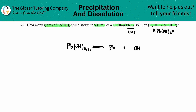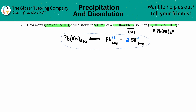So we get Pb²⁺ and OH⁻. Using the subscripts and criss-cross method: hydroxide is a negative one charge, and there are two hydroxides, telling us Pb is a plus two. Since they have charges, they're aqueous. Balancing: there are two hydroxides, so we put a 2 in front of OH⁻.